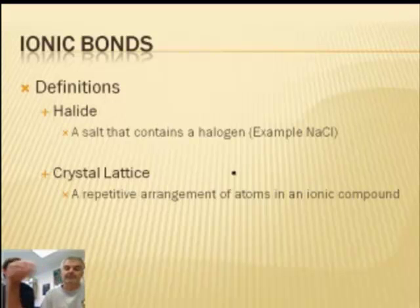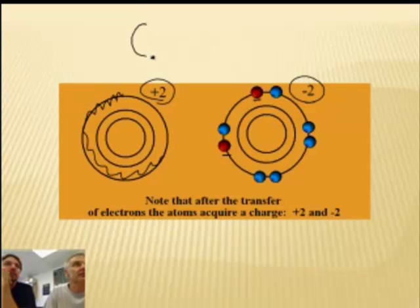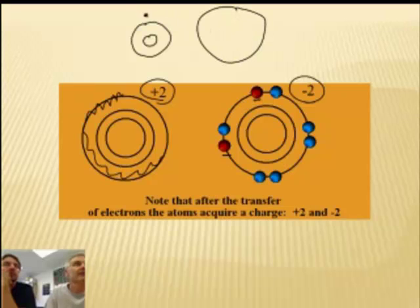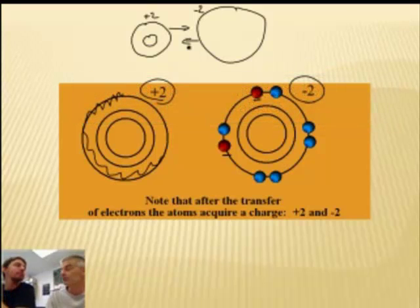And this one gains two electrons, symbolized by the red dots, and gets a negative-two charge, because electrons are negatively charged. Opposites attract, so the plus-two attracts the minus-two. The outer electron shell no longer exists, so the atom that lost electrons will be smaller. They attract each other, and that's what causes an ionic bond: electrons transfer, there are opposite charges, they attract, they make a bond.